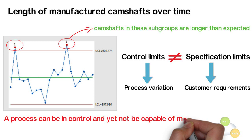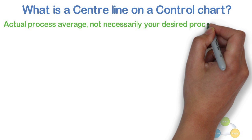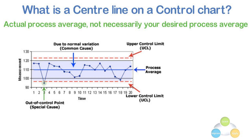What is center line on a control chart? The center line of your control chart represents your actual process average, not necessarily your desired process average. The center line is a horizontal reference line on a control chart that is the average value of the charted quality characteristic.